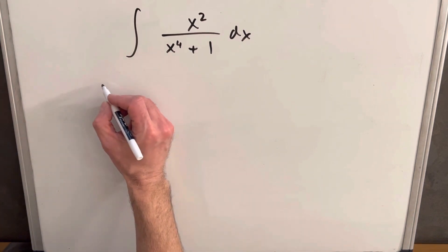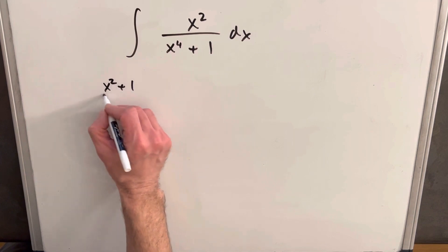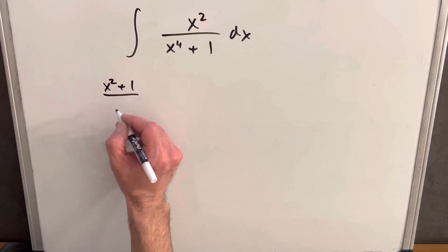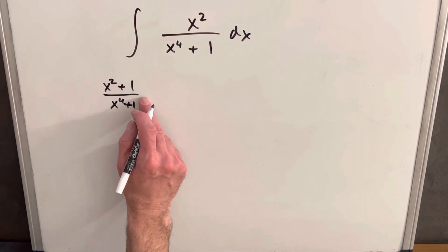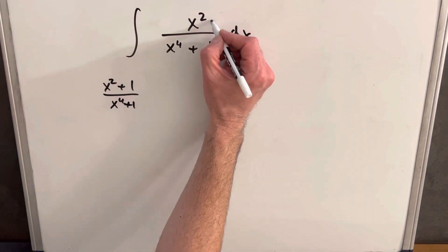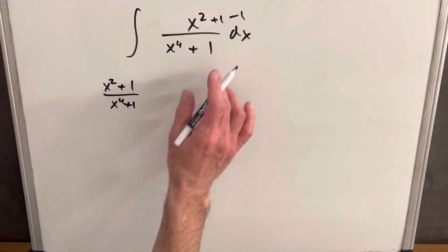One thing I want to recall is I know that I can do this integral of 5x squared plus 1 over x to the fourth plus 1.